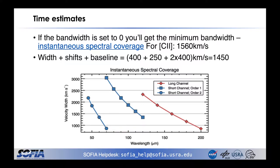How wide will the spectrum be? The instantaneous spectral coverage is the minimum width of the spectrum you will get, and that is what you get if you set zero as the bandwidth. For C-plus, that's 1560 km per second. The line width is 400 km per second, it shifts about 250 km per second, and we need baseline on both sides — about twice the line width. Adding that up gives 1450 km per second, which is less than the instantaneous spectral coverage, so we don't need to request a broader spectrum.